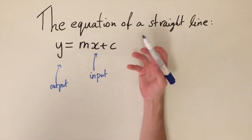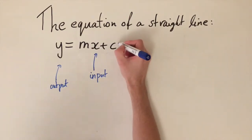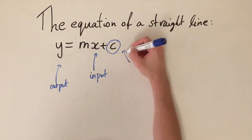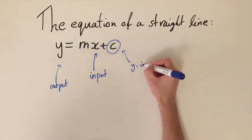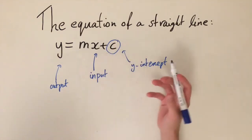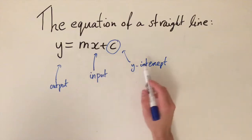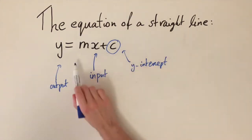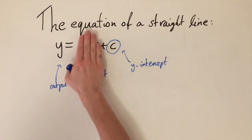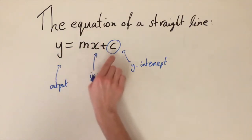And then m and c are constants, so they're just numbers. If we take c first, so we have plus c, this represents the y-intercept. So if we were to sketch this graph, then the line would cross the y-axis at y is equal to c. This kind of makes sense because if you put x is equal to 0 into this equation, this term just vanishes right here and we're just going to get y is equal to c.